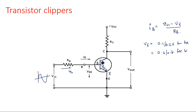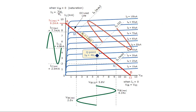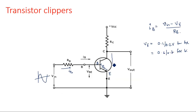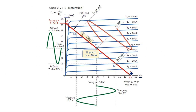Looking at the VI characteristics of the transistor — as studied in Electronic Devices and Circuits (EDC) — on the x-axis is VCE (collector-to-emitter voltage) and on the y-axis is IC (collector current). These characteristics show different curves at different values of base current IB.